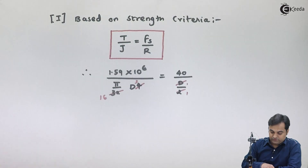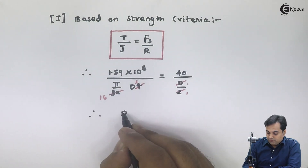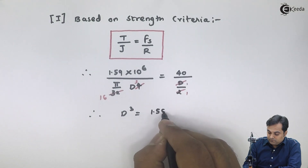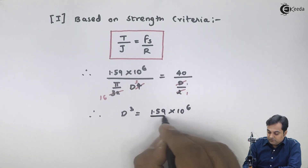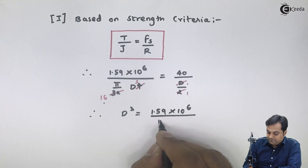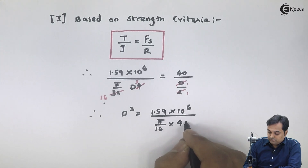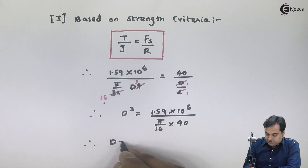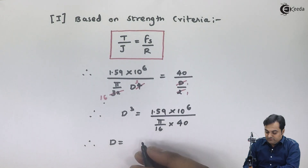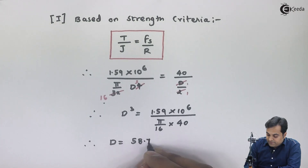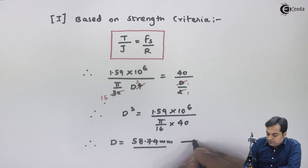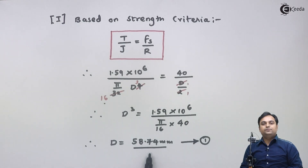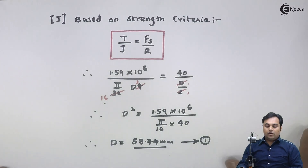So D³ = 1.59 × 10⁶ / (π/16 × 40). Calculating numerator over denominator and taking the cube root gives diameter D = 58.74 mm. This is equation number one — based on strength criteria, the diameter is 58.74 mm for the solid shaft.